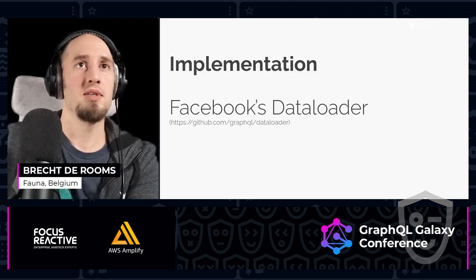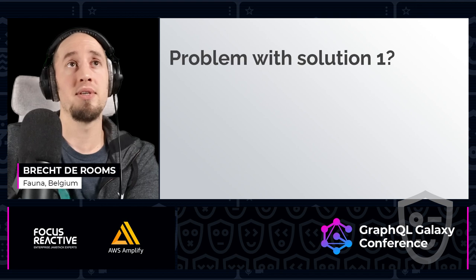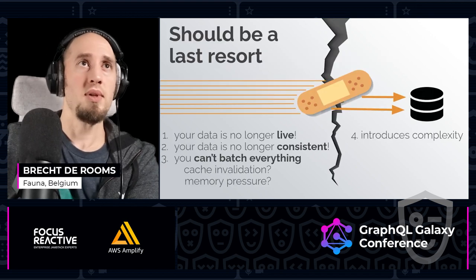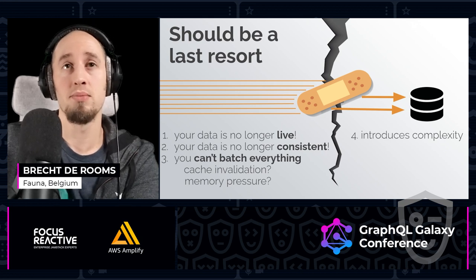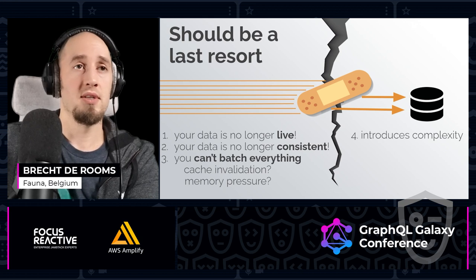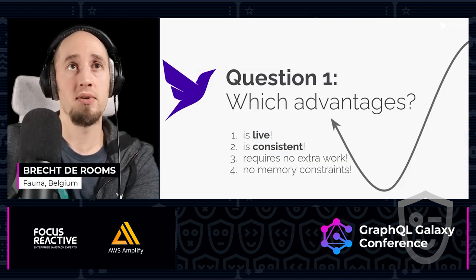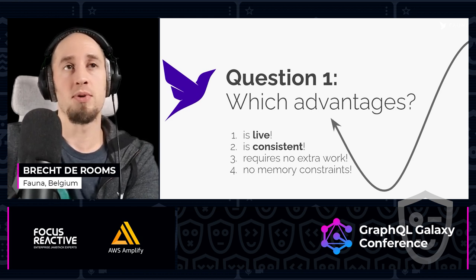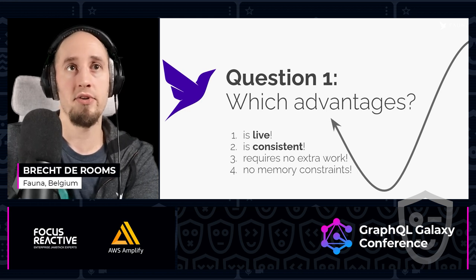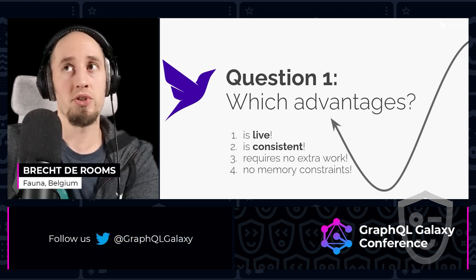A very popular implementation is Facebook's DataLoader, which you can just plug in on top of your resolvers and it will handle it for you. However, there's a problem with this solution as well — it should in fact be a last resort. Your data is no longer live, it's no longer consistent, you can't apply it on everything, so you will still have multiple calls. What about caching validation, memory pressure that you have to deal with suddenly? So it introduces complexity. Fauna's approach doesn't deal with these problems because it doesn't have them. It is live by default, it is consistent, it requires no extra work, and there is no memory constraint problem — it just works out of the box.